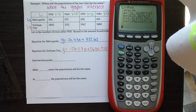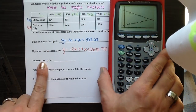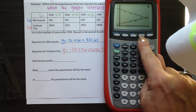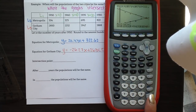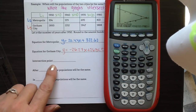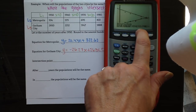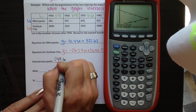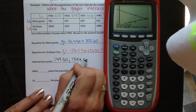The equations were already stored in Y equals from before. To find the intersection point on the graph, do second TRACE, choose number five for Intersect, then enter enter enter. The intersection point is approximately (49.50, 1,333.80) when rounded to the nearest hundredth.